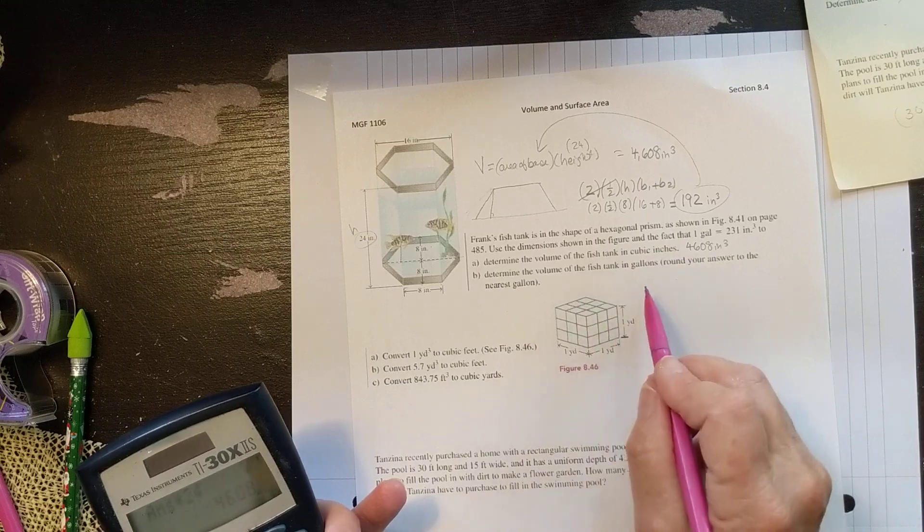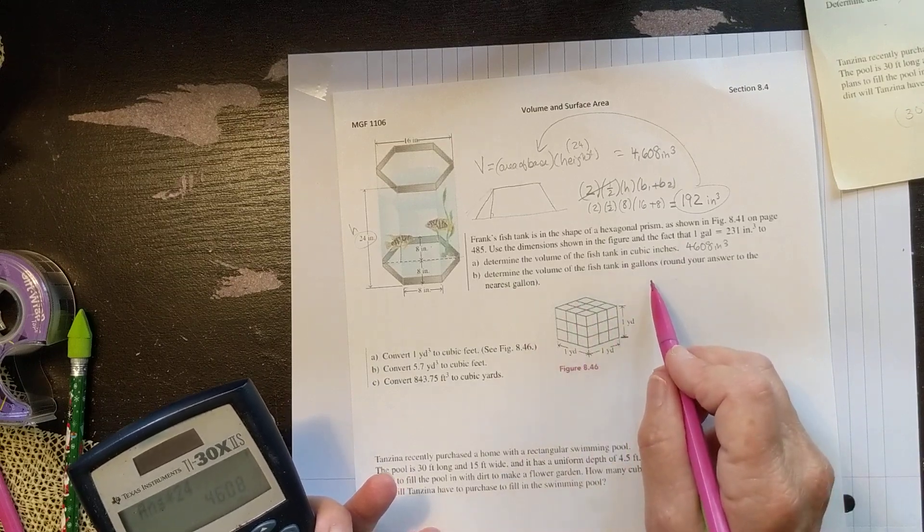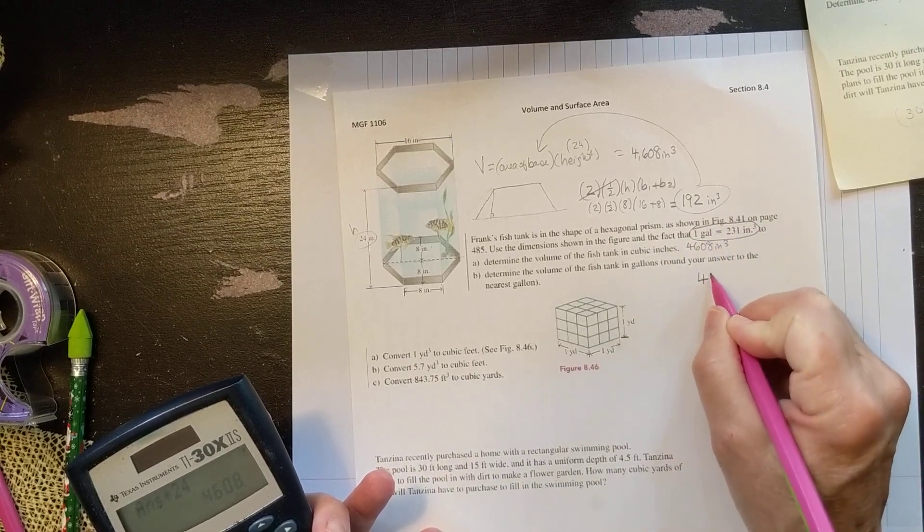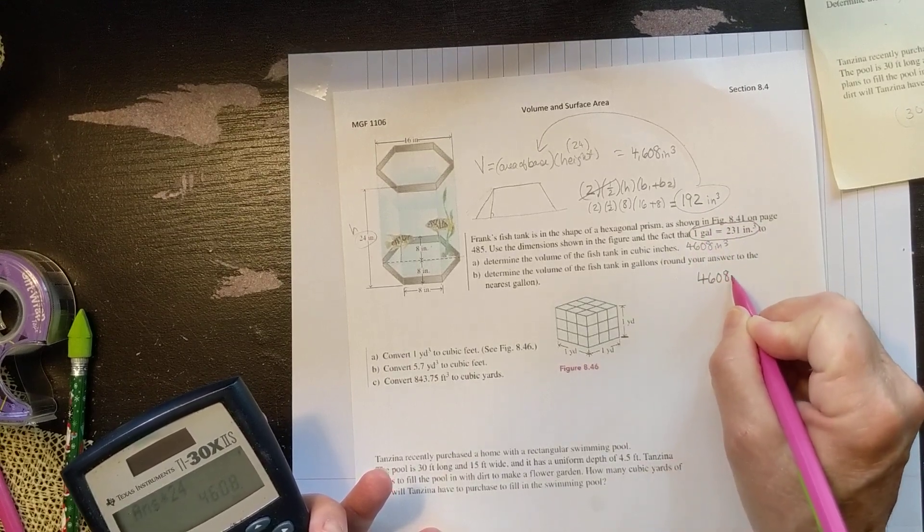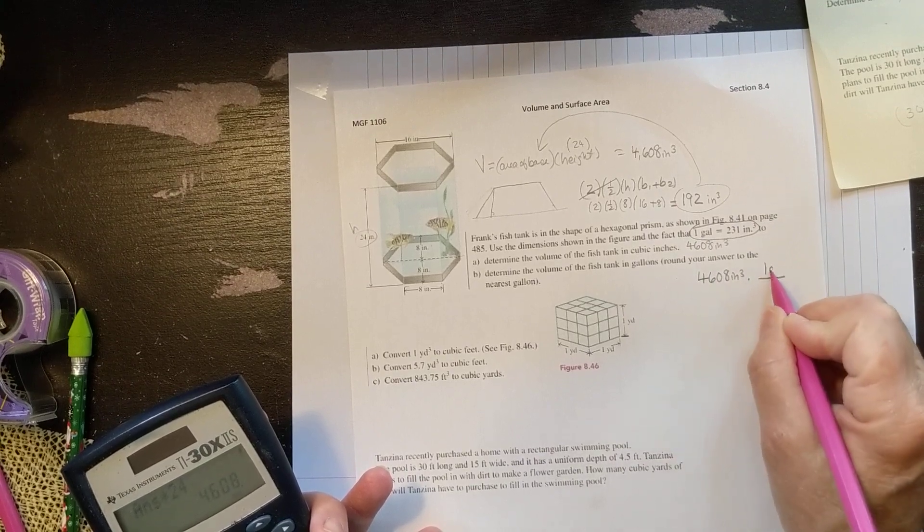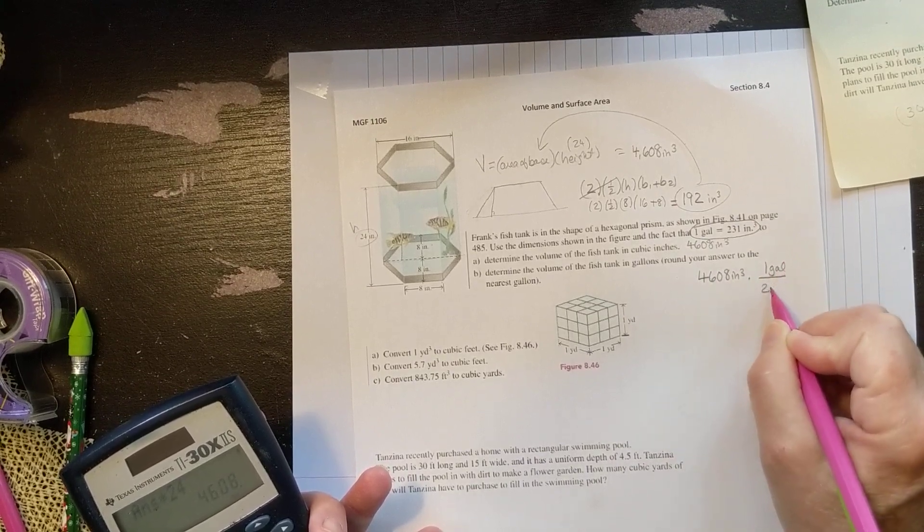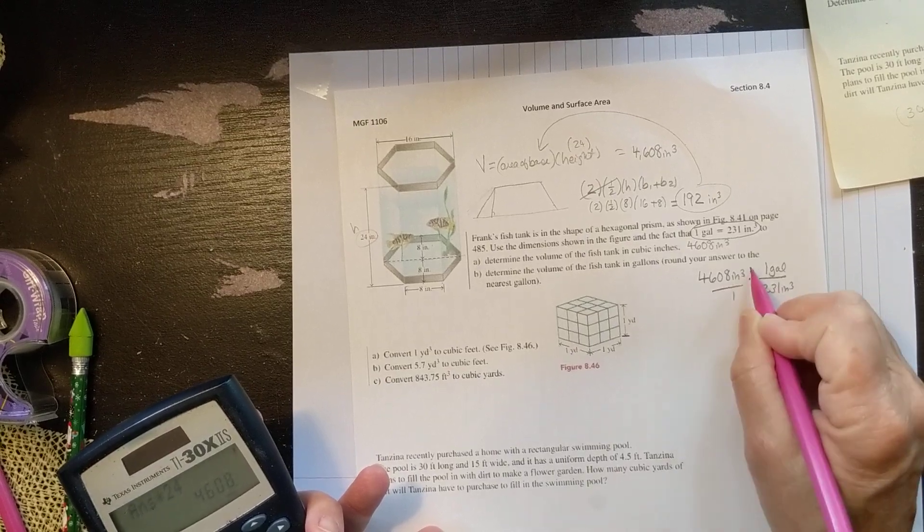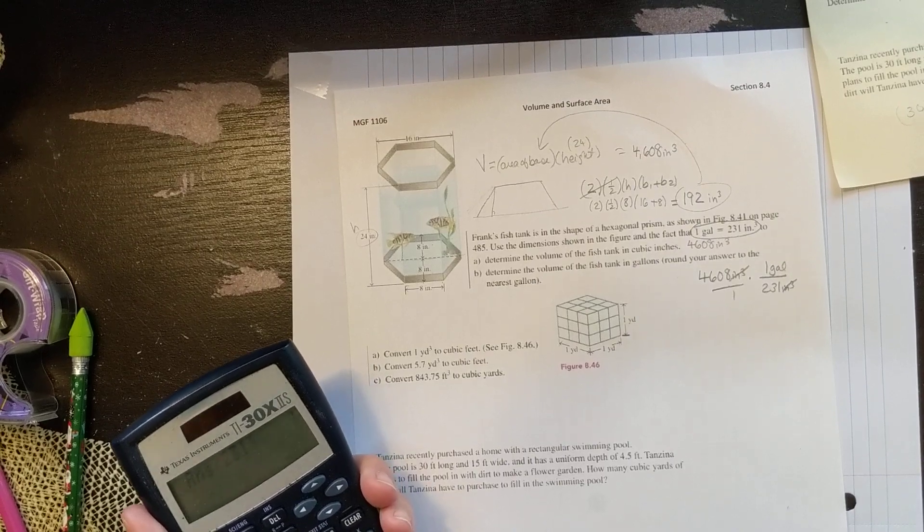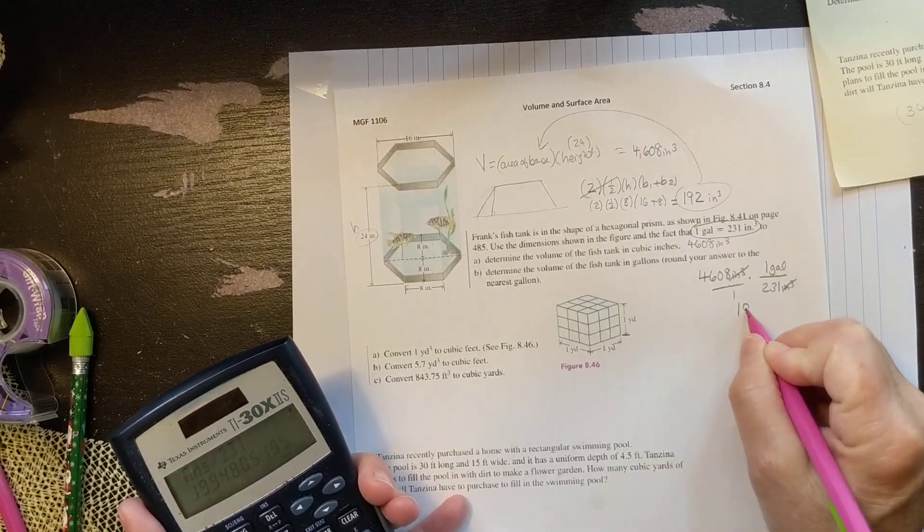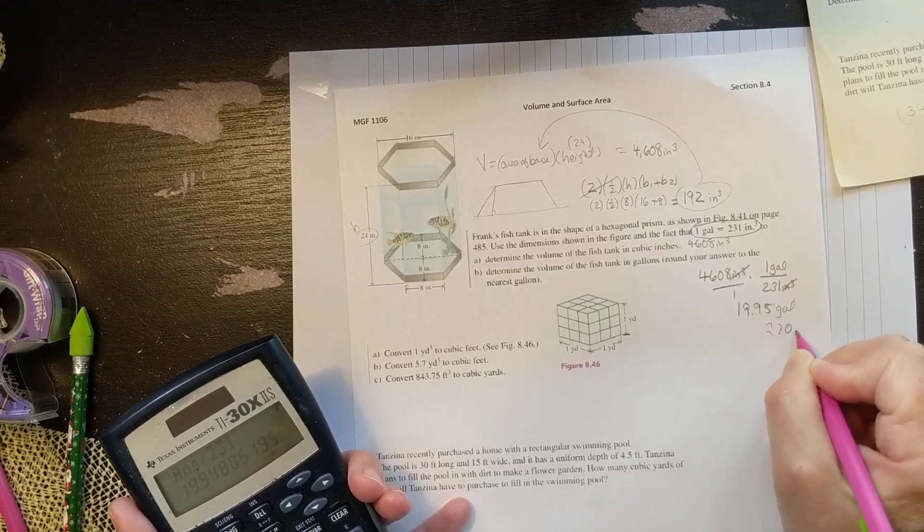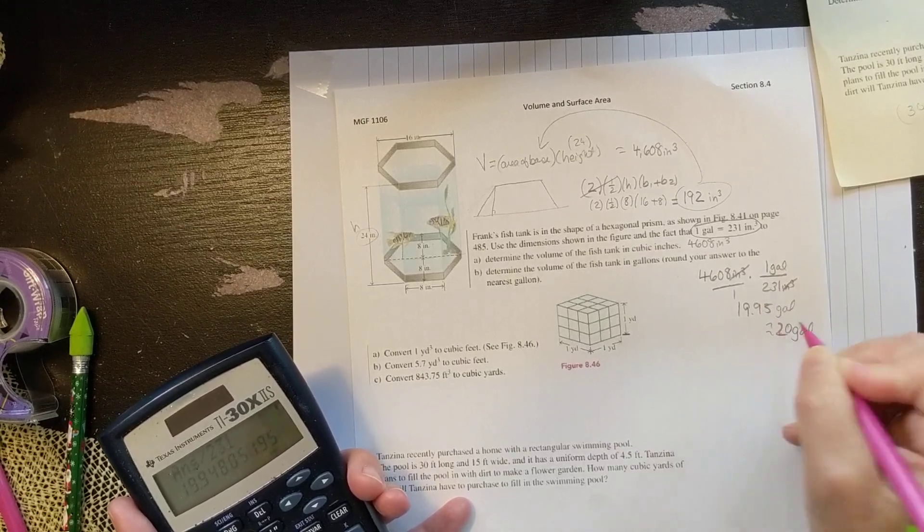Now, how much is this in gallons? Well, they tell us that one gallon is equal to 231 cubic inches. So I'm just going to convert 4,608 cubic inches times, I want it to turn into gallons, divided by 231 cubic inches. These will divide out, divided by 231 gives me 19.95. So this is about a 20 gallon tank right there.